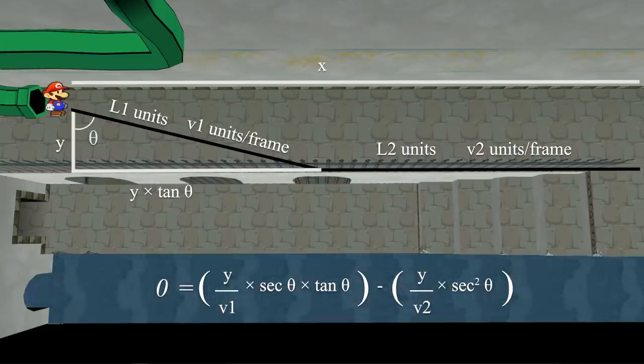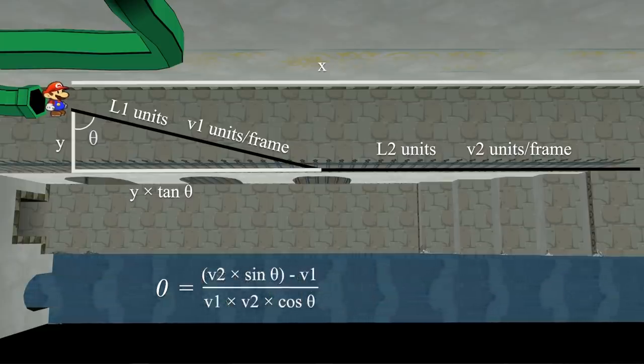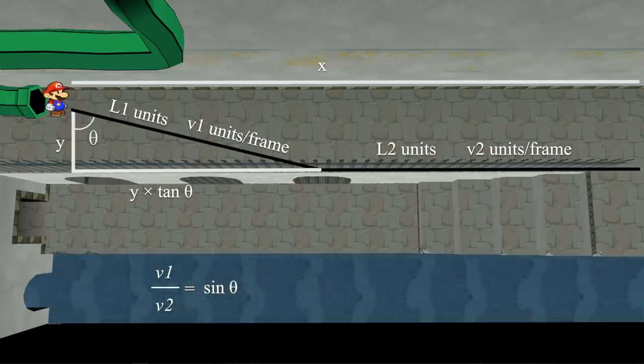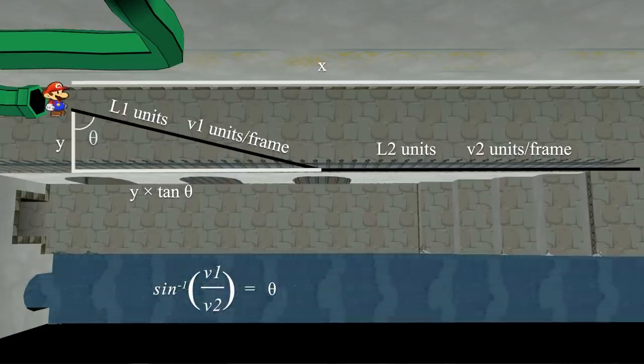We can simplify things a bit, a little more, once more, and we're good. We end up with sine theta is equal to v1 divided by v2. Then we can just take the inverse sine of both sides, and we're left with theta is equal to inverse sine of v1 over v2.